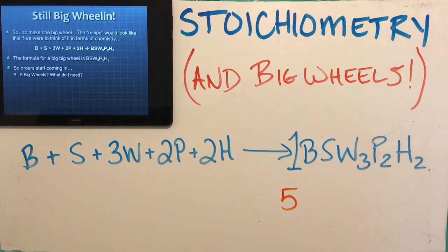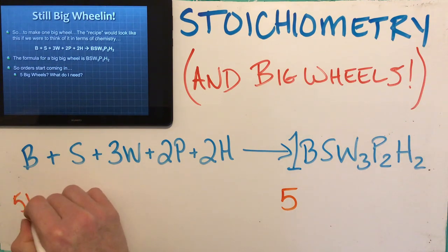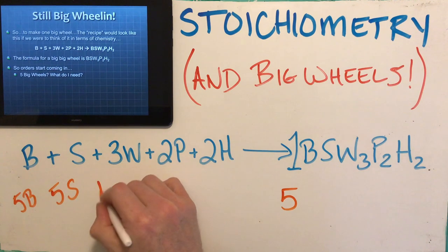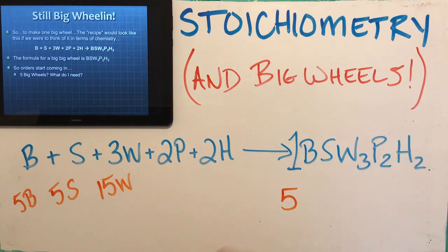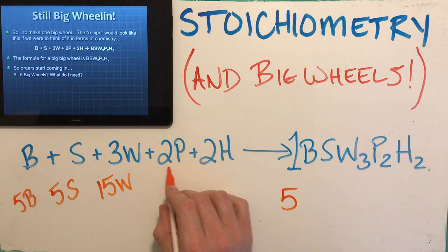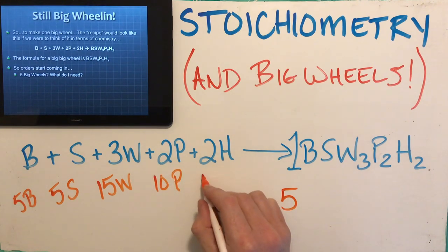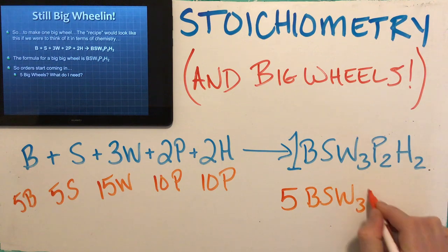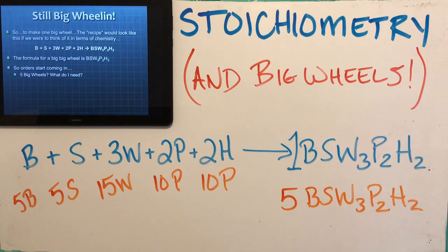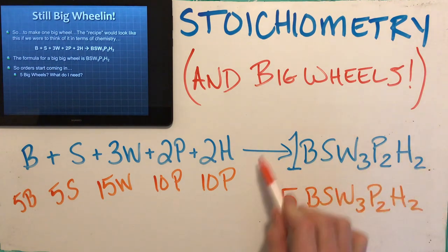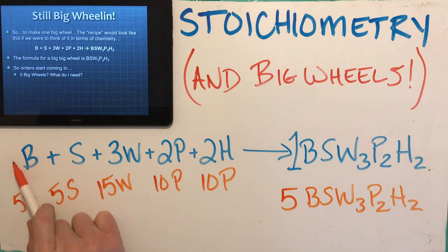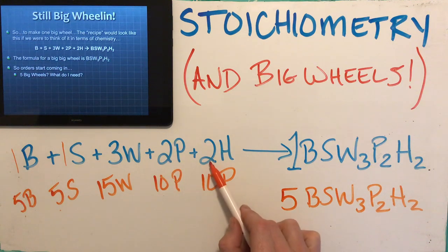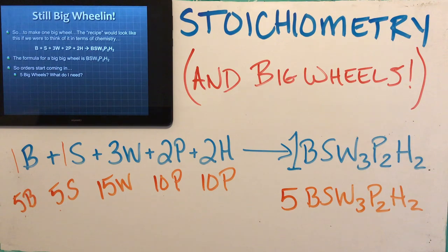So what am I going to need? In your head you're thinking: I'll need five bodies, five seats, fifteen wheels (because there's three wheels on each big wheel), ten pedals, and ten hand grips — and that'll give me my five big wheels. I just simply multiplied everything by five: one times five, one times five, three times five, two times five, two times five to get us the five big wheels.